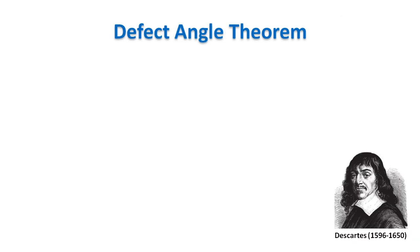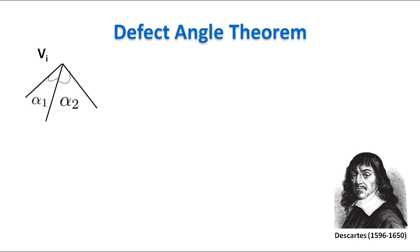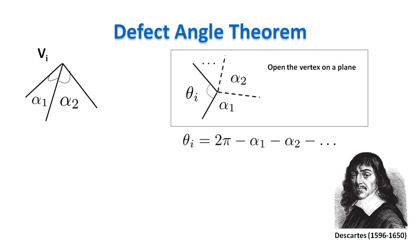The defect angle formula for polyhedra was stated much before the Gauss-Bonnet theorem, but it is the discrete equivalent of it. Given a vertex vi of a polyhedra, we define the defect angle theta i at the vertex vi to be 2 pi minus the sum of the angles of the faces of the polyhedra at the vertex vi.